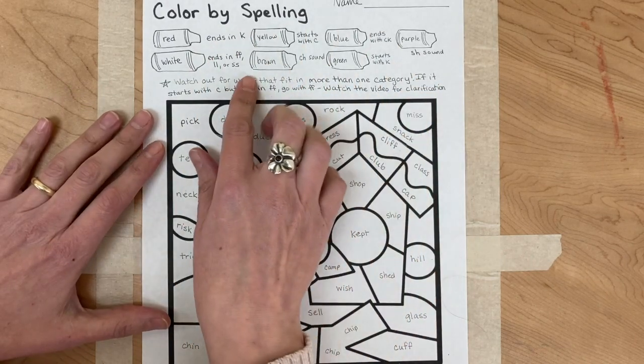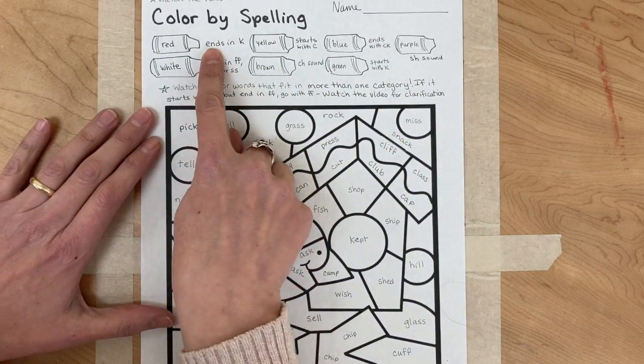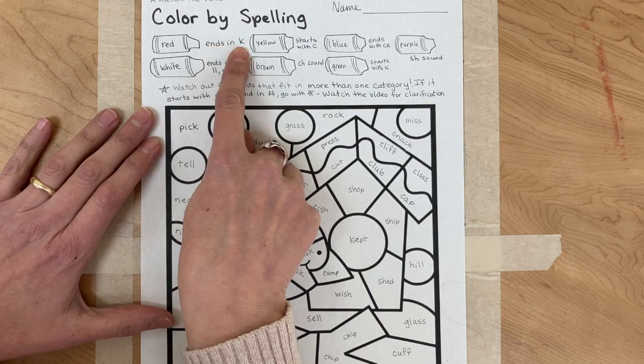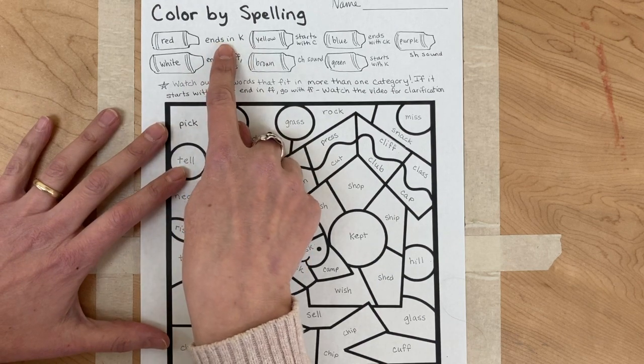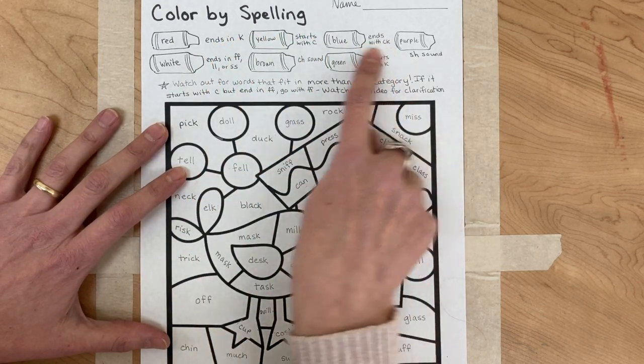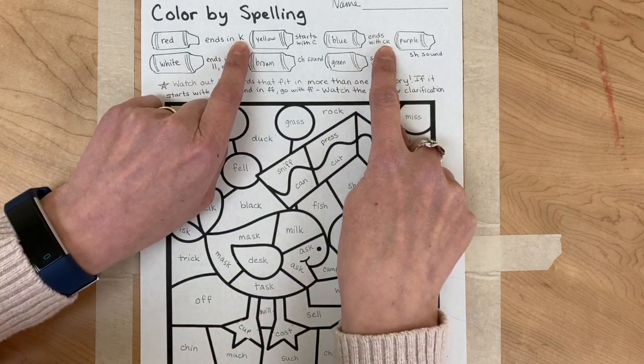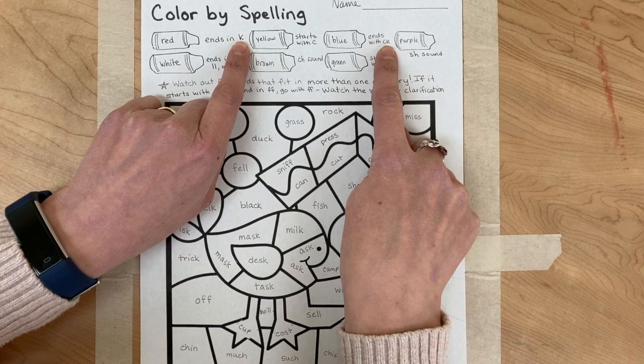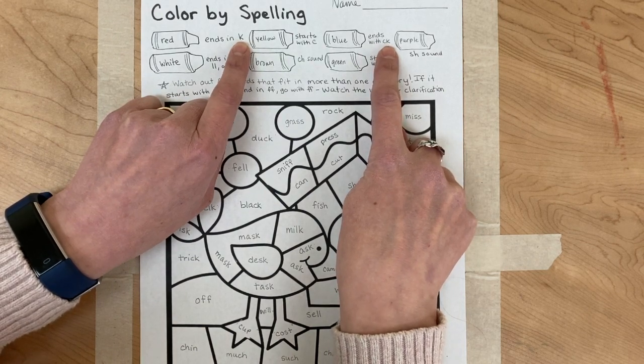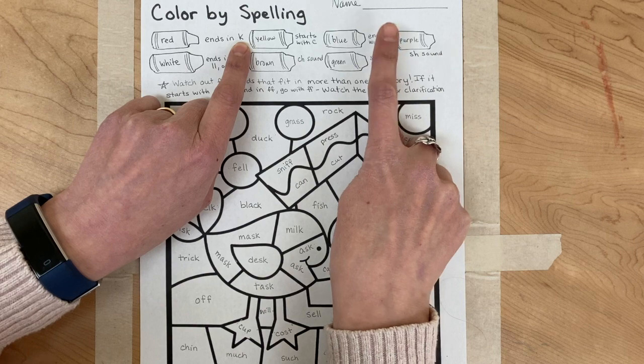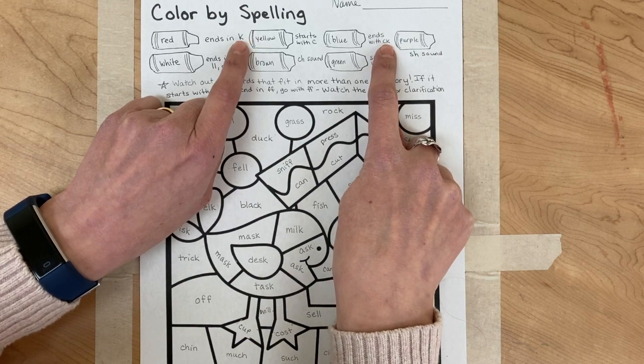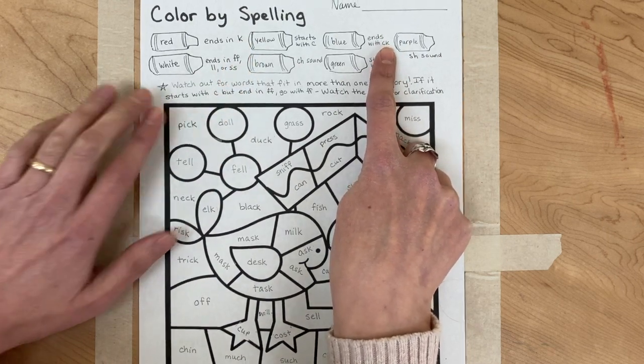You're looking for words that end in K, and you're also looking for words that end with CK. Now words that end in K also end in CK, don't they? So you have to watch out for that. If it has a C and a K at the end, it ends in CK, not just K.